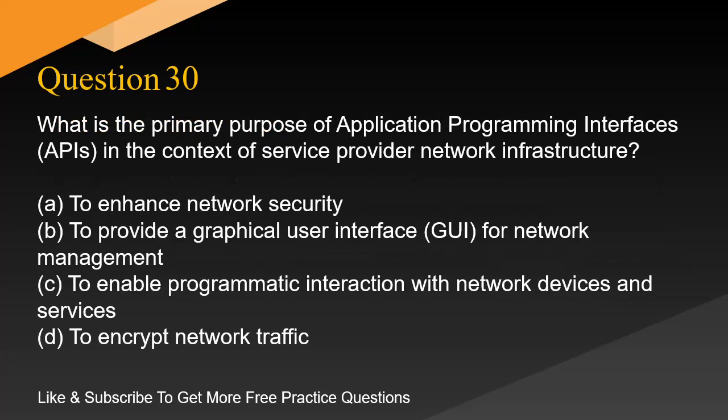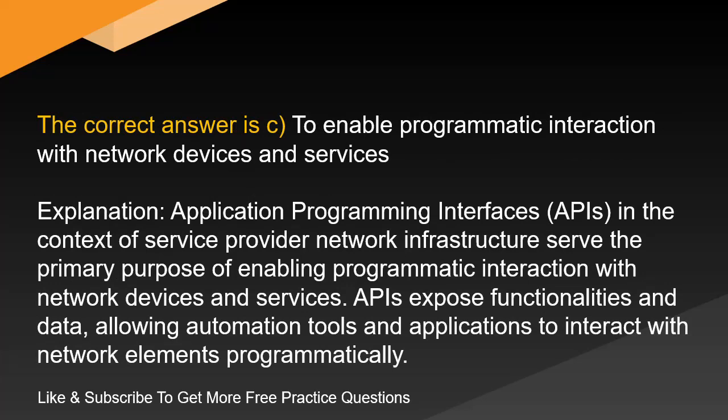Question 30. What is the primary purpose of application programming interfaces (APIs) in the context of service provider network infrastructure? A. To enhance network security. B. To provide a graphical user interface for network management. C. To enable programmatic interaction with network devices and services. D. To encrypt network traffic. The correct answer is C. To enable programmatic interaction with network devices and services. Explanation: APIs in the context of service provider network infrastructure serve the primary purpose of enabling programmatic interaction with network devices and services. APIs expose functionalities and data, allowing automation tools and applications to interact with network elements programmatically.